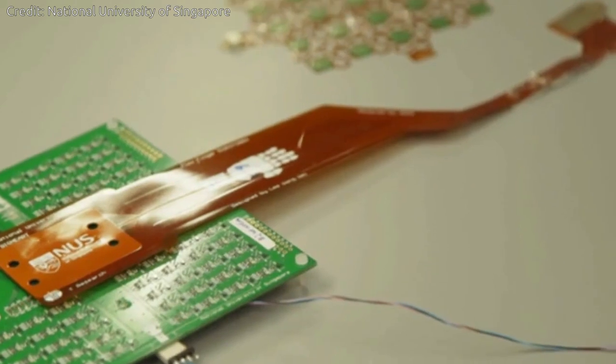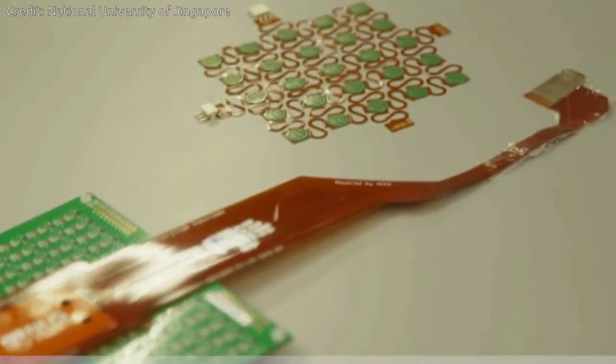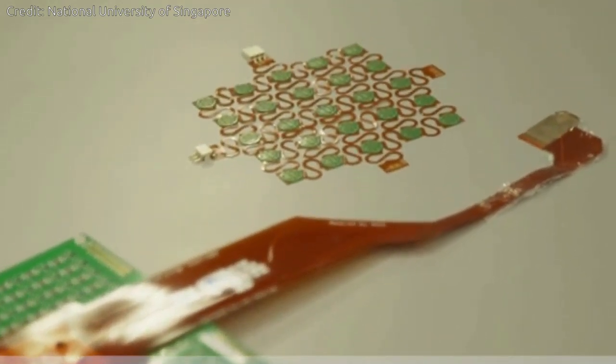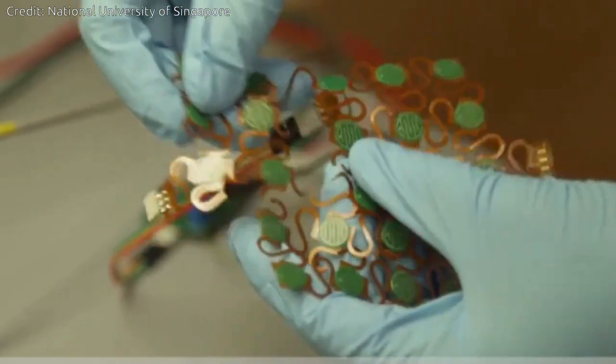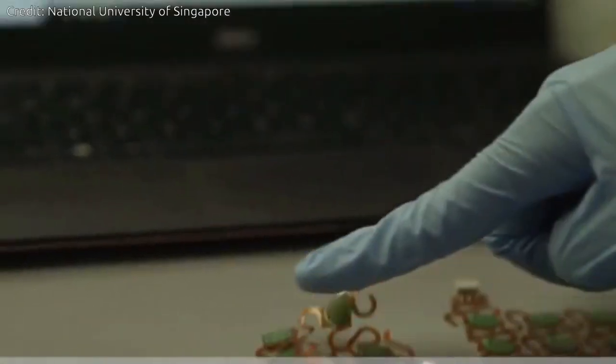Unlike the current system used to interconnect sensors in existing electronic skins, all the sensors in ACES can be connected to a common electrical conductor with each sensor operating independently.